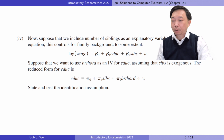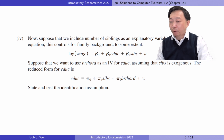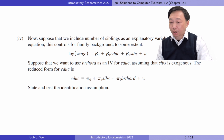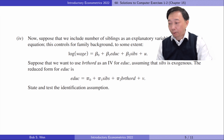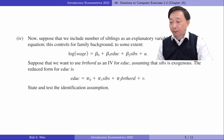In part 4, suppose that we include the number of siblings as an explanatory variable in the wage equation. This controls for family background to some extent. Suppose that we want to use birth order as an instrumental variable for education, assuming that the variable siblings is exogenous. The reduced form equation for education is as follows. State and test the identification assumption.